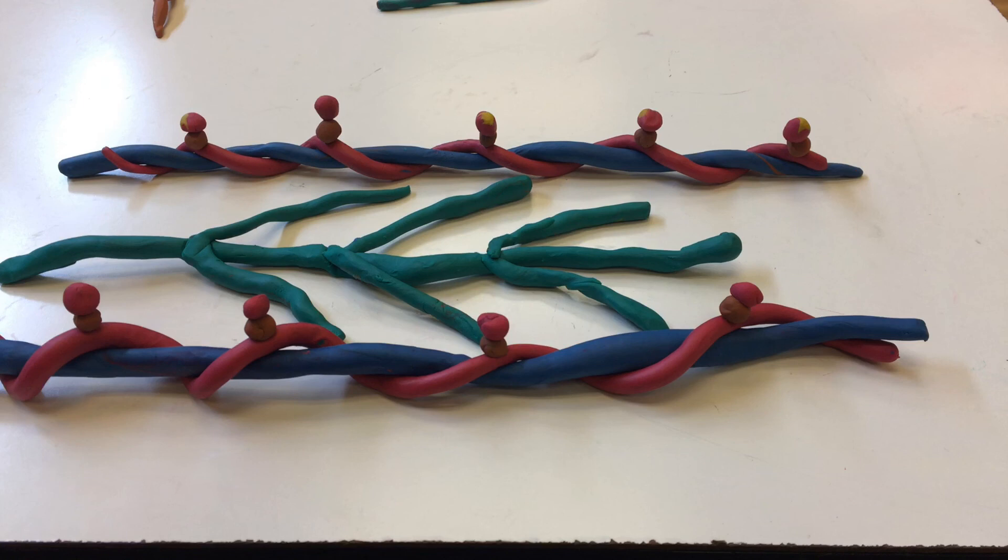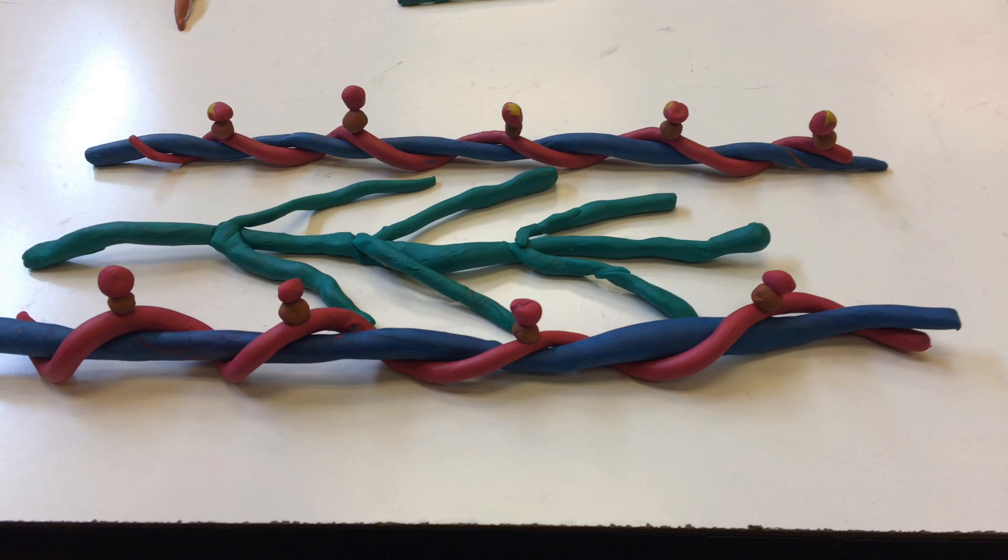Before we move on we should label a few things. The green clay is a thick filament. The red clay that is wrapped around the blue clay is called the tropomyosin. And the little brown clay that's on the red clay is called the troponin. So the troponin is on the tropomyosin and the calcium attaches to the troponin.